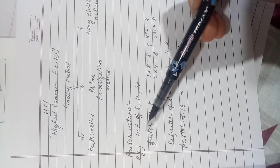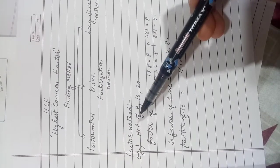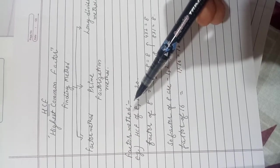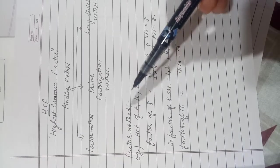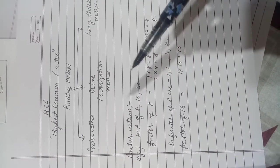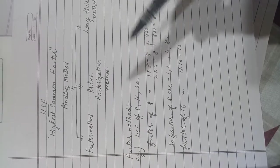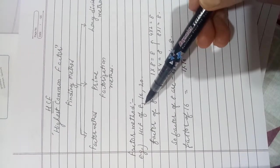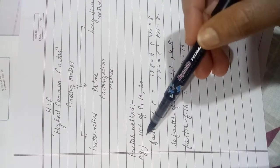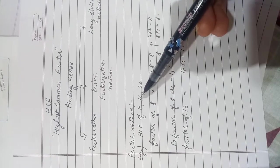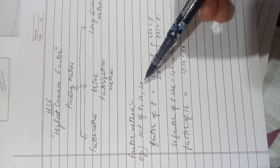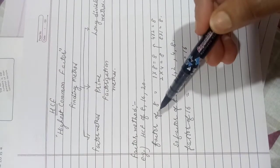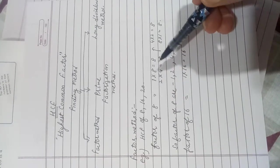The first one is the factor method. In the factor method, we first find the factors of each number, then we take the common ones, and from those we can find the HCF. I am taking the example of finding the HCF of 8, 16, and 20.